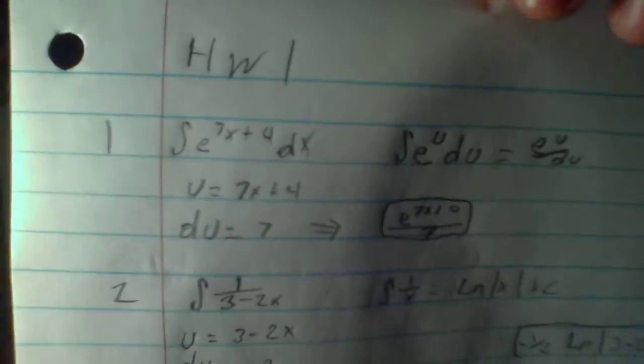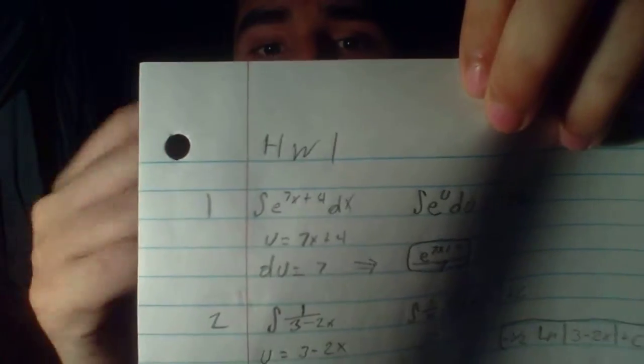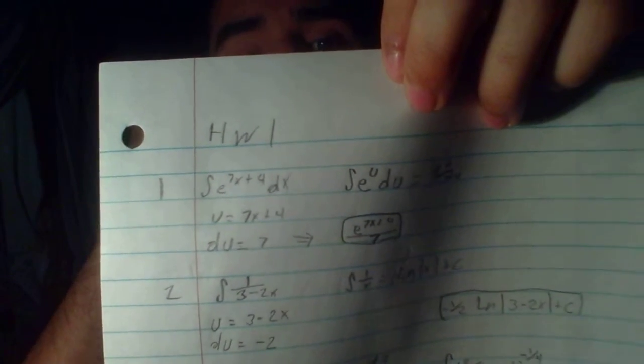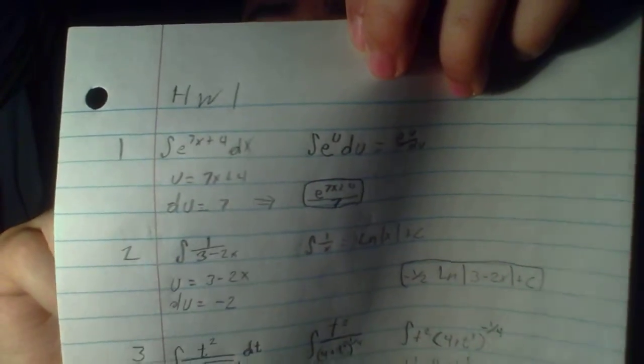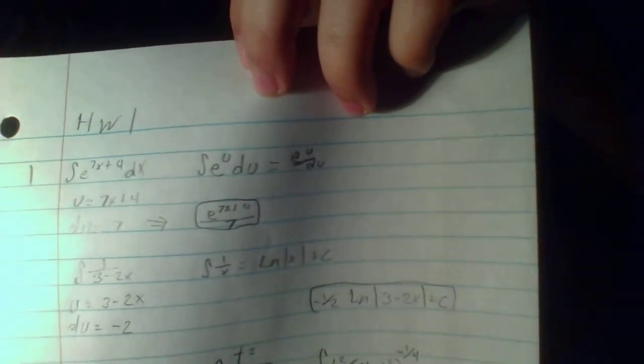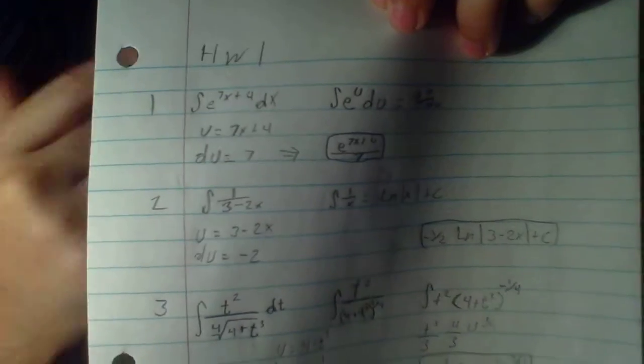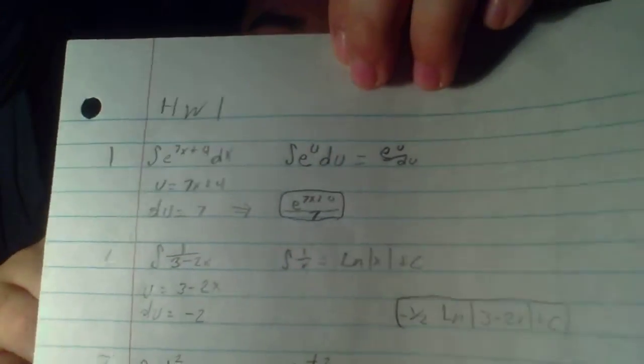Here you see integral of e to 7x plus 4 dx, which looks hard. What you do is take that 7x plus 4, replace it with U. And then DU is just the derivative of that, which is just 7.